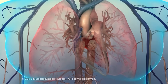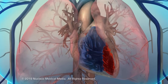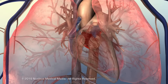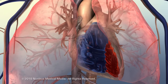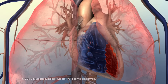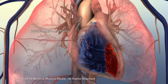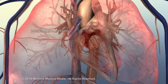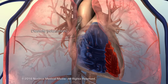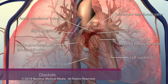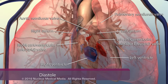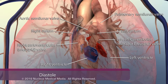The cardiac cycle is the sequence of contraction and relaxation of the heart chambers during a single heartbeat. The contraction of the heart chambers is called systole, and relaxation of the heart chambers is called diastole. The cycle begins with both the atria and ventricles in diastole.